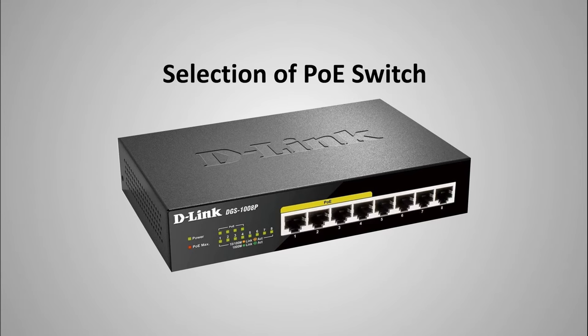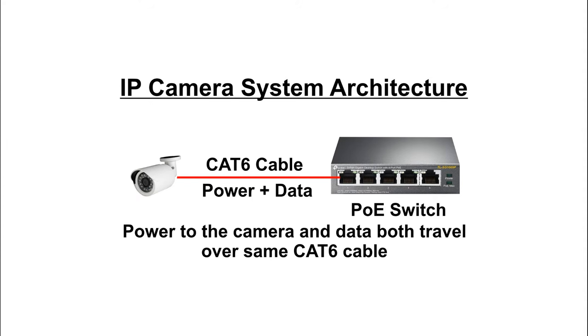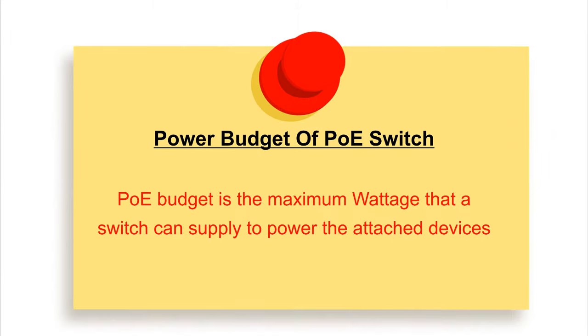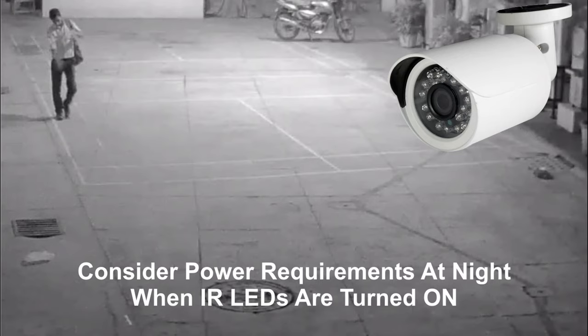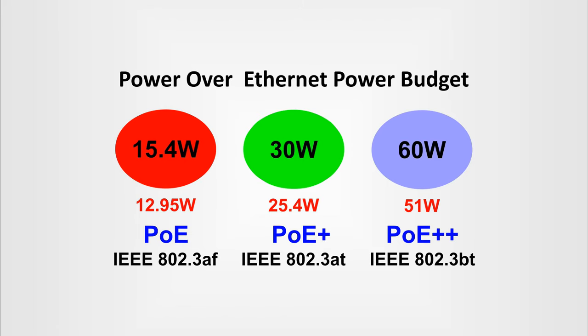The switches used in the network will support PoE (Power over Ethernet), meaning the switch provides power to cameras over the same cable used for data transfer — no separate power cable is needed. Each PoE switch comes with a power budget. Before selecting a PoE switch, calculate the combined power requirements of all cameras, including nighttime IR LED consumption. PoE switch power budget is measured in watts, and switches are available in three classes: PoE, PoE+, and PoE++.